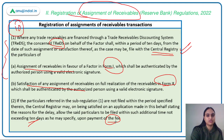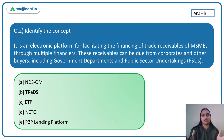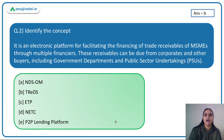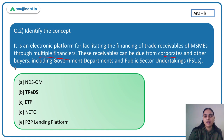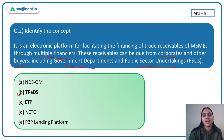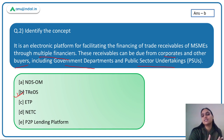We have two more questions related to factoring. The second question asks: identify the concept — it's an electronic platform facilitating financing of trade receivables of MSMEs to multiple financers, where receivables can be due from corporate buyers, government departments, or public sector undertakings. Having discussed this earlier, you know the answer is TREDS — the Trade Receivables Discounting System.